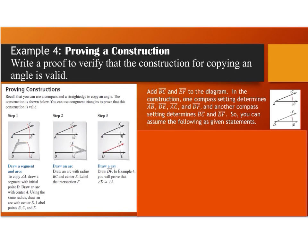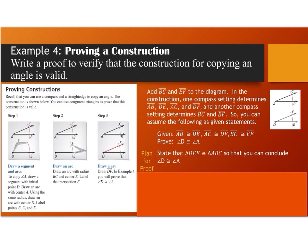Another compass setting determines segment BC and segment EF. You can assume the following as given statements: side AB is congruent to side DE, AC is congruent to DF, and BC is congruent to EF — all because they used the same compass settings. We want to prove that angle D is congruent to angle A. To plan the proof, state that triangle DEF is congruent to triangle ABC so that you can conclude angle D is congruent to angle A.